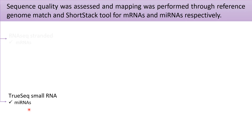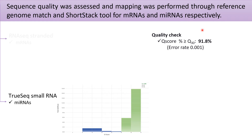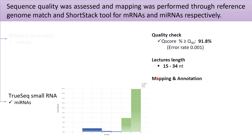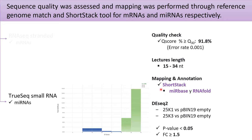We did the same with miRNAs: first a quality check with very good parameters. We kept only reads between 15 and 34 nucleotides. Mapping and annotation were performed using ShortStack, miRBase, and RNAfold. To identify differentially expressed miRNAs, we applied DESeq2 comparing effectors versus the empty plasmid, and filtered by p-value and fold change.